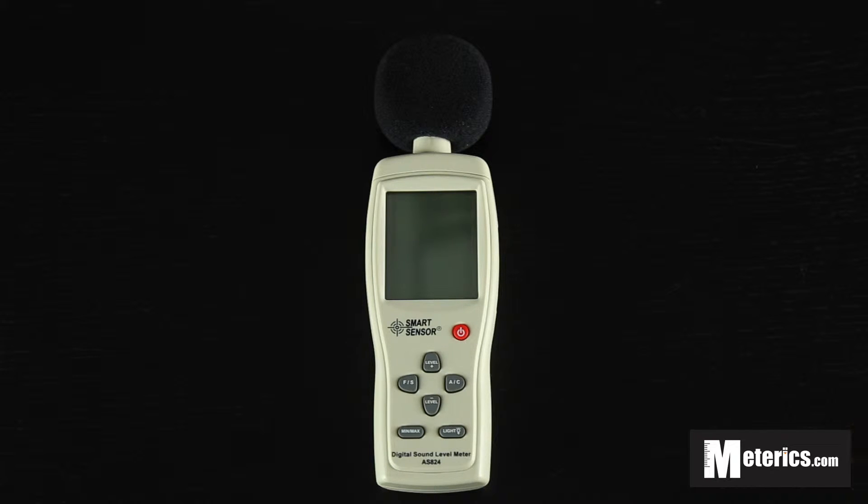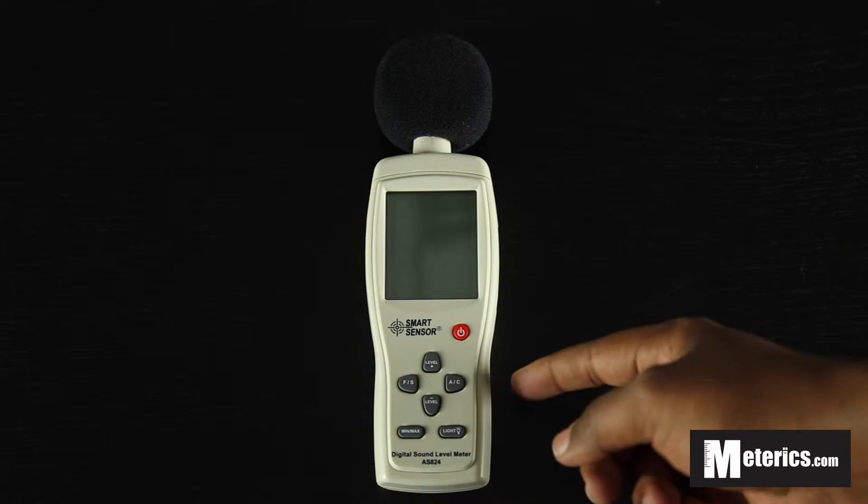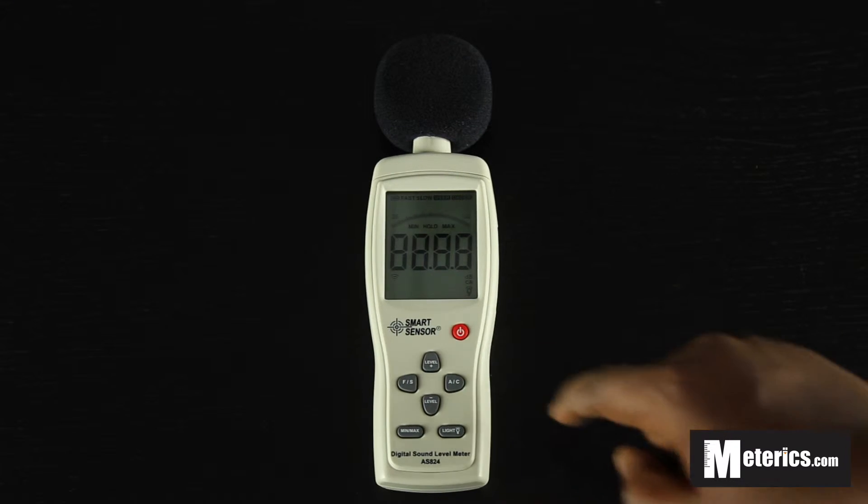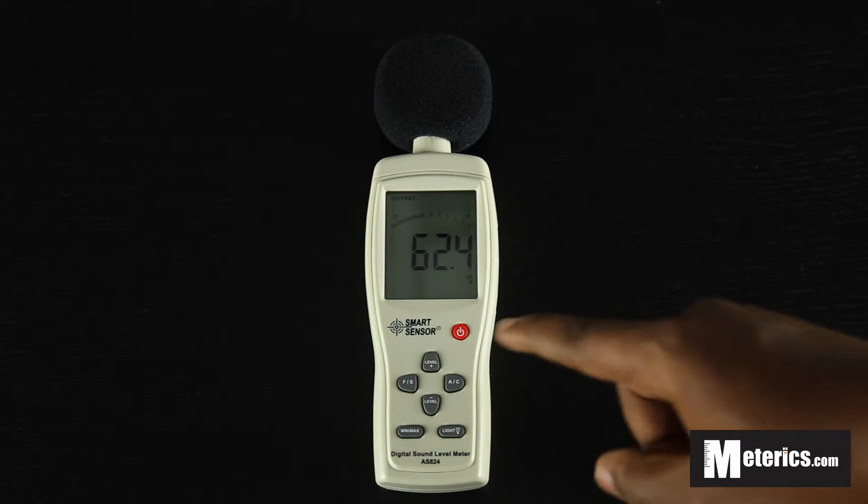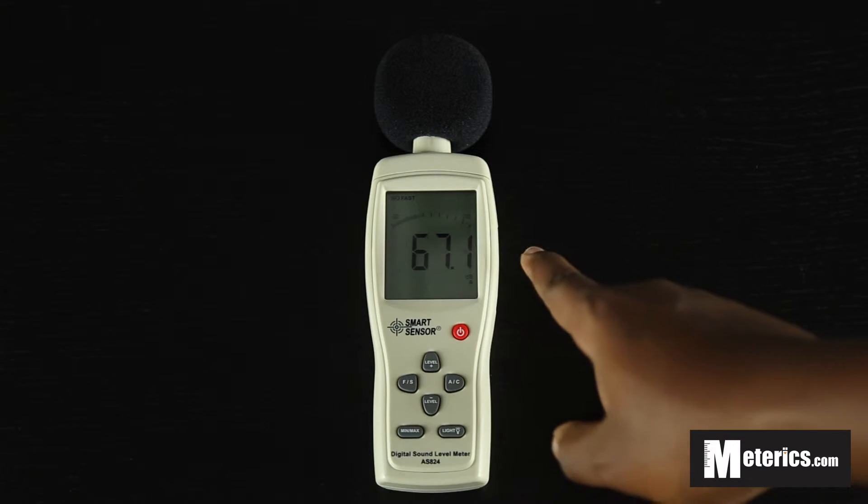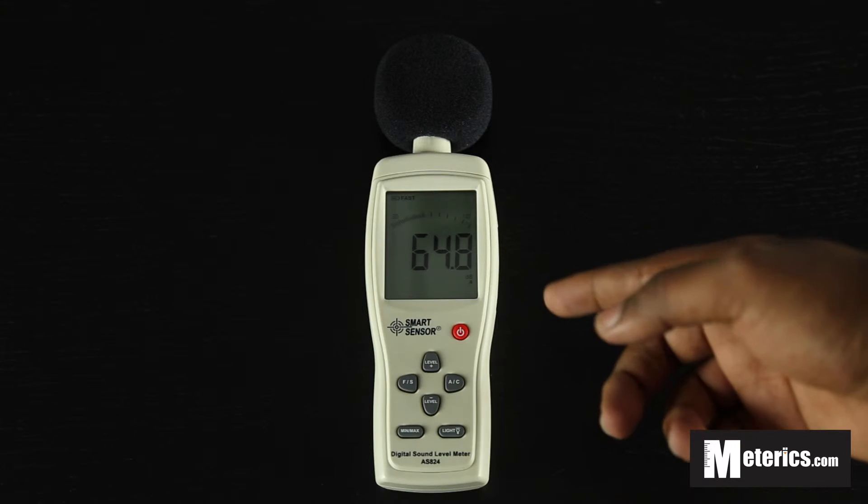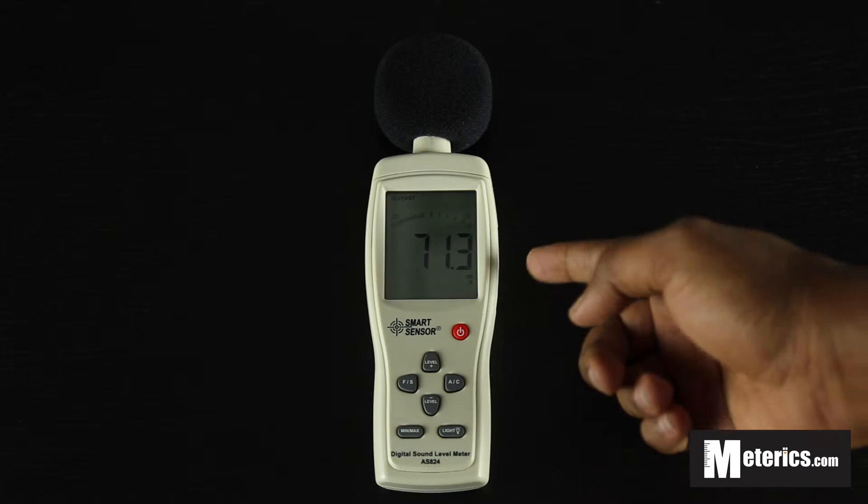So what we are going to do is pop the batteries in. This uses a 9V battery. We put that in the back and then we turn the meter on. So we push this button once and in a matter of seconds you will see it has an analog bar and some values up there. These are the values of the sound level readings that it is currently picking up.